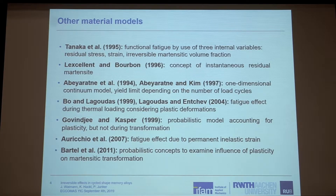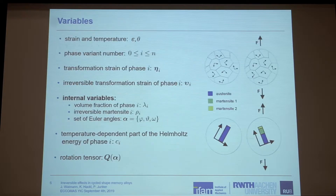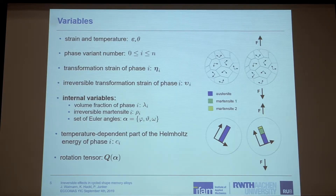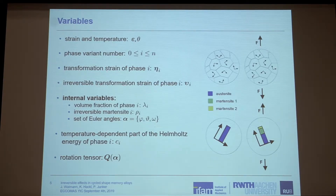There are a lot of other material models working on that topic. Let me just mention them and move to our material model. First of all, I want to show the variables I will use. We have strain epsilon and temperature theta. We have different phases: one austenite and several different martensitic phases. Every phase is characterized by a transformation strain — the reversible ones and also the irreversible ones — and these transformation strains are given by experiments.